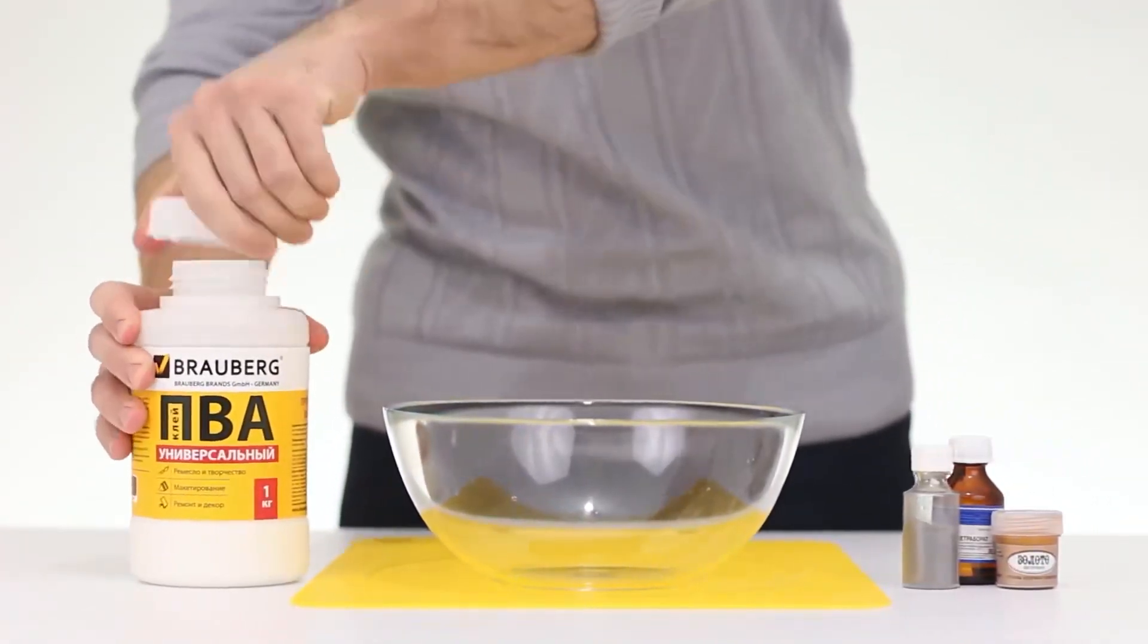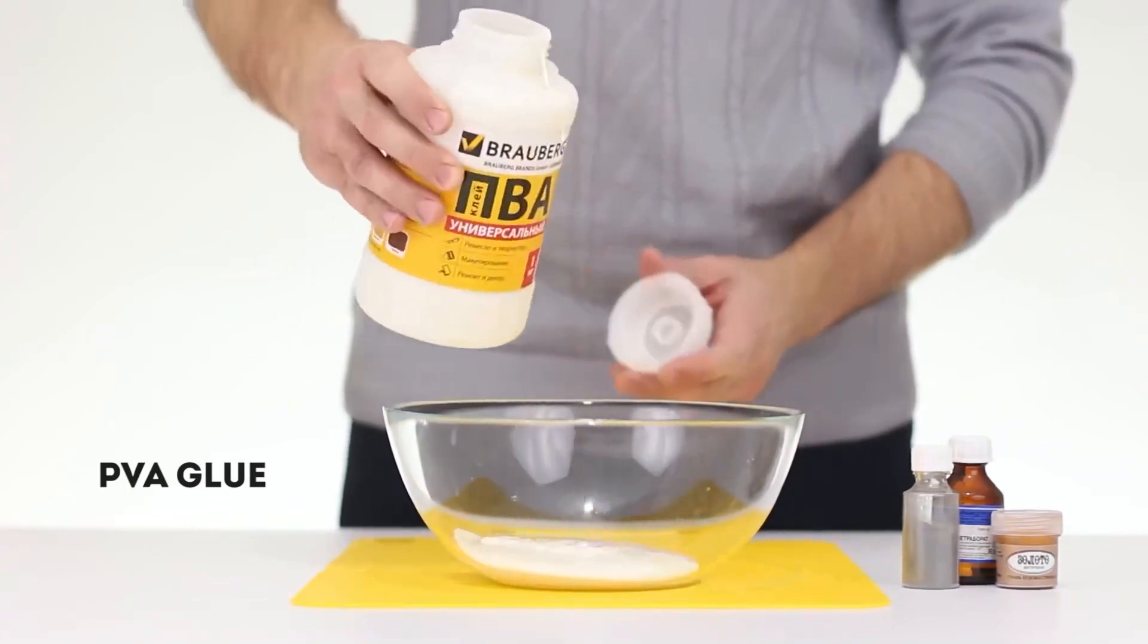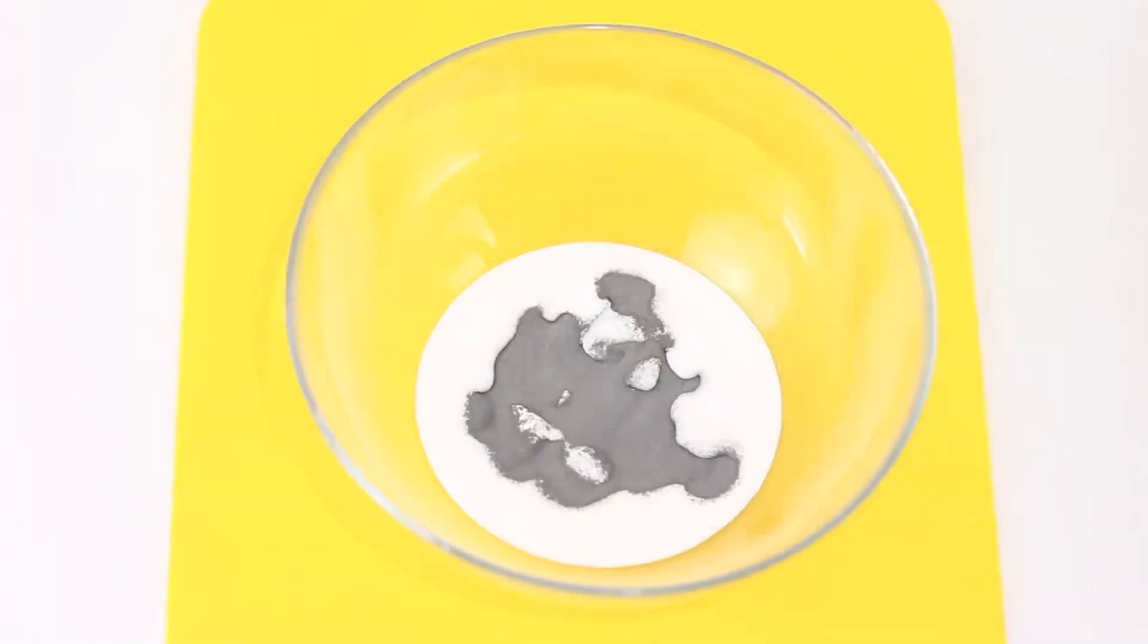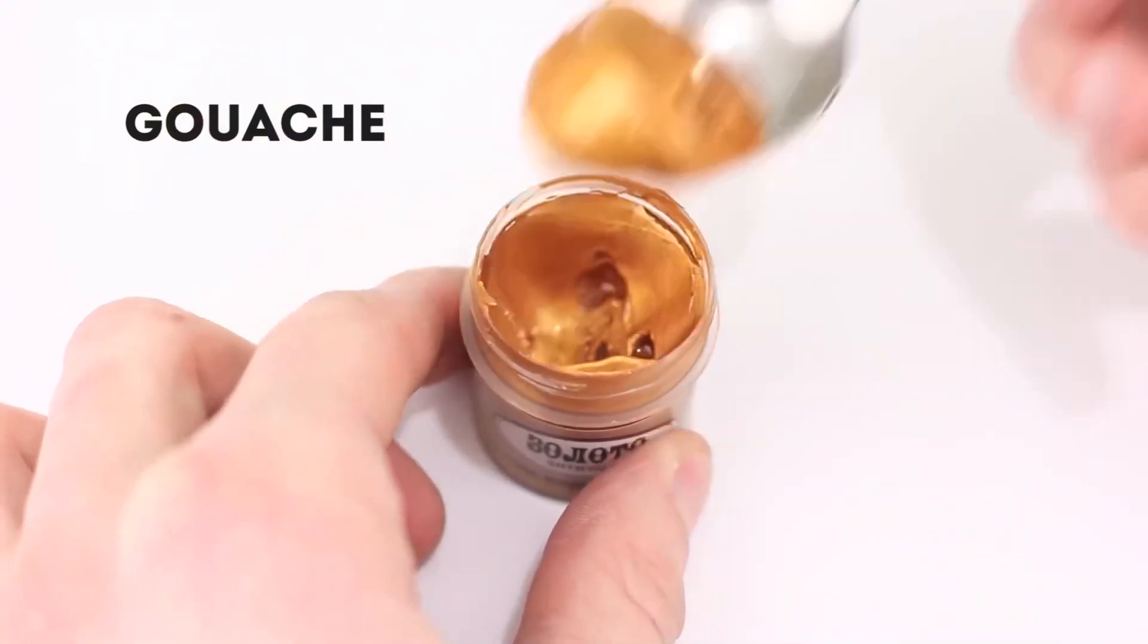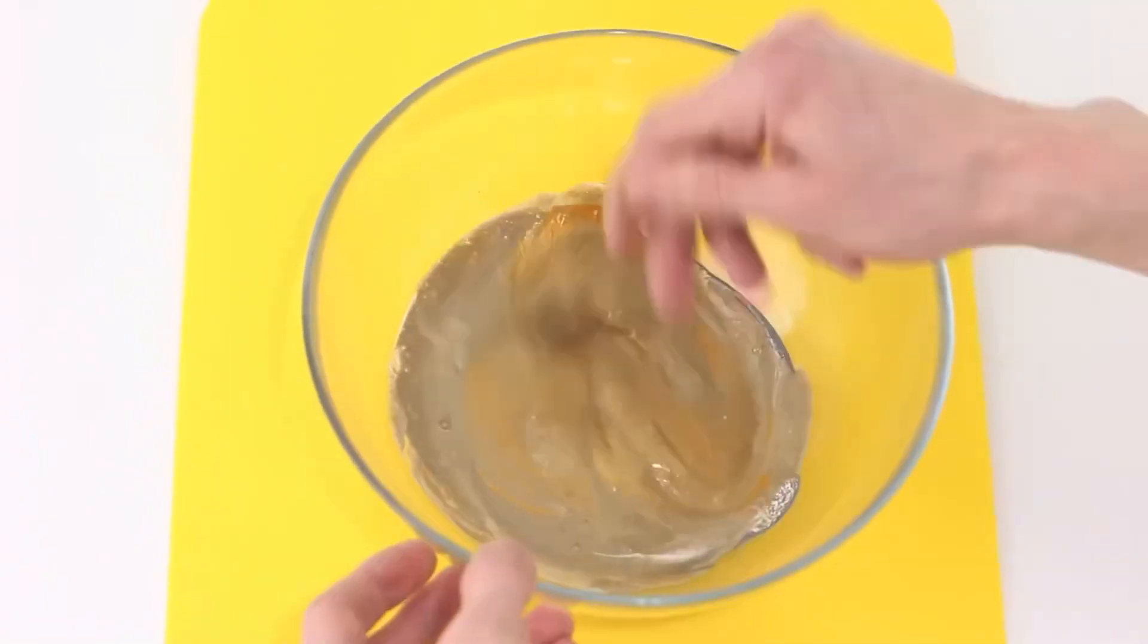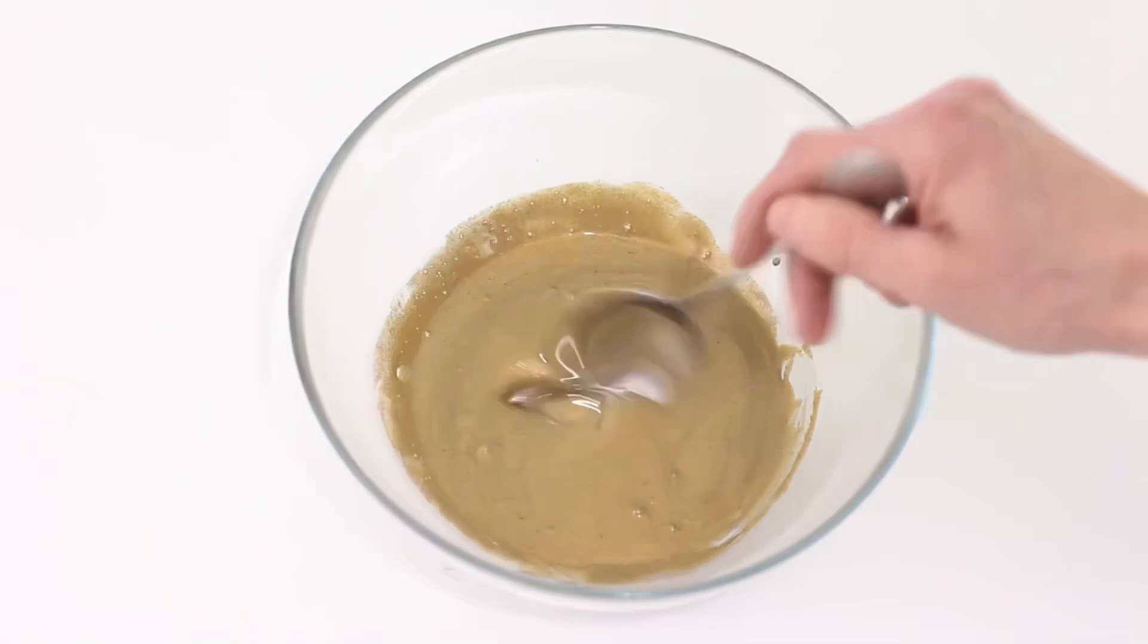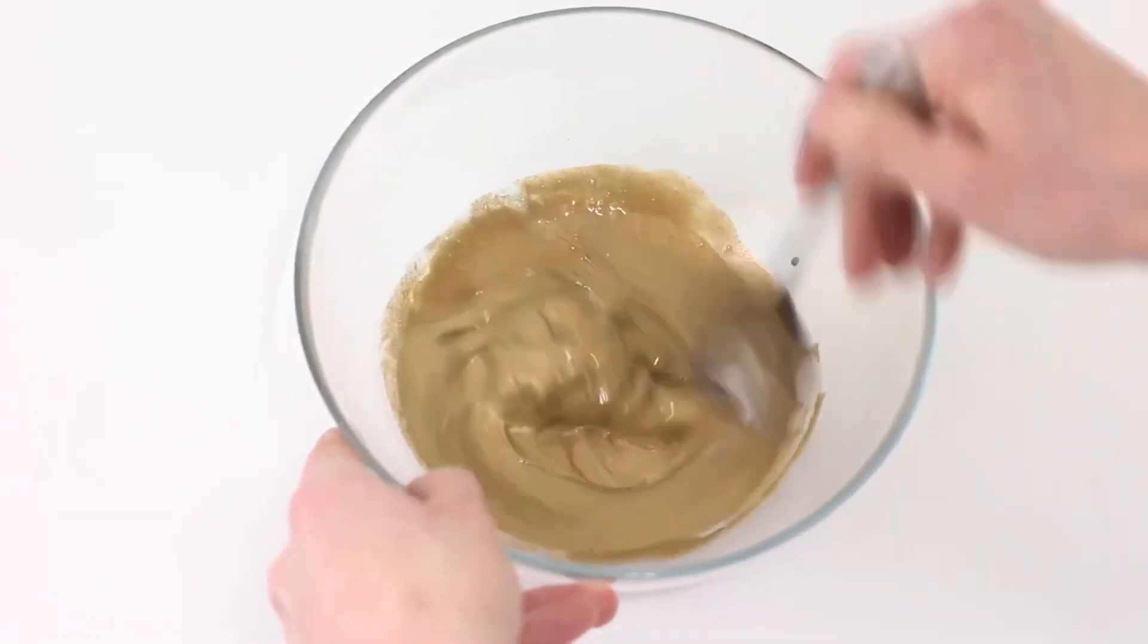Pour some PVA glue into a bowl. Add some steel spray and bright gouache. Mix the mask until smooth. And now add sodium. And we'll mix it until the mask turns into real slime.